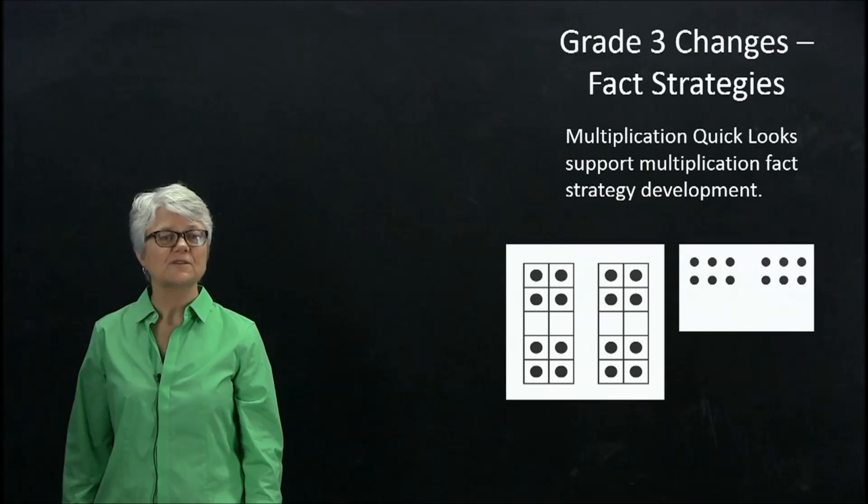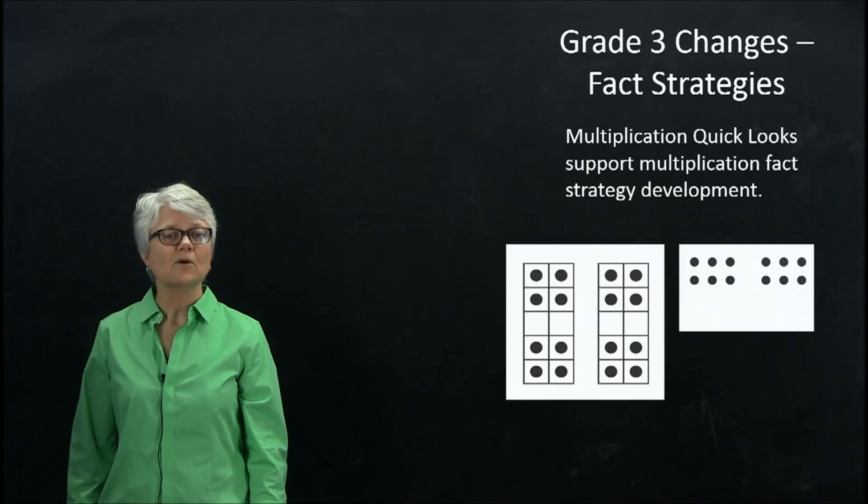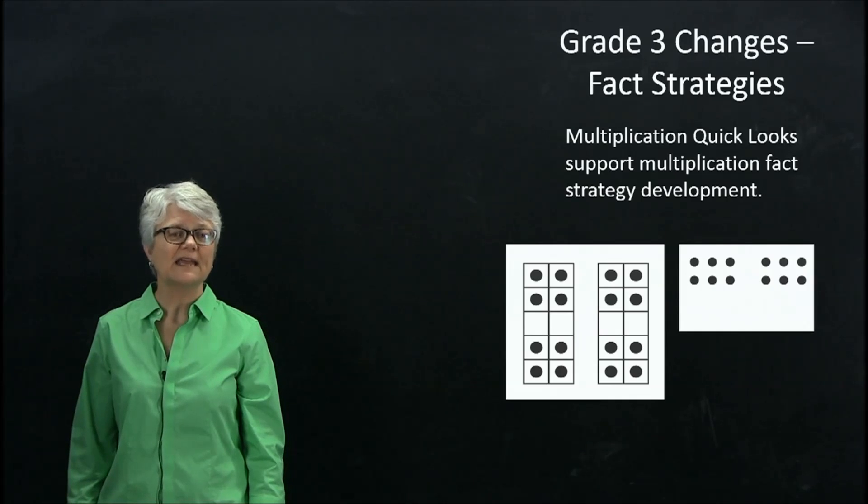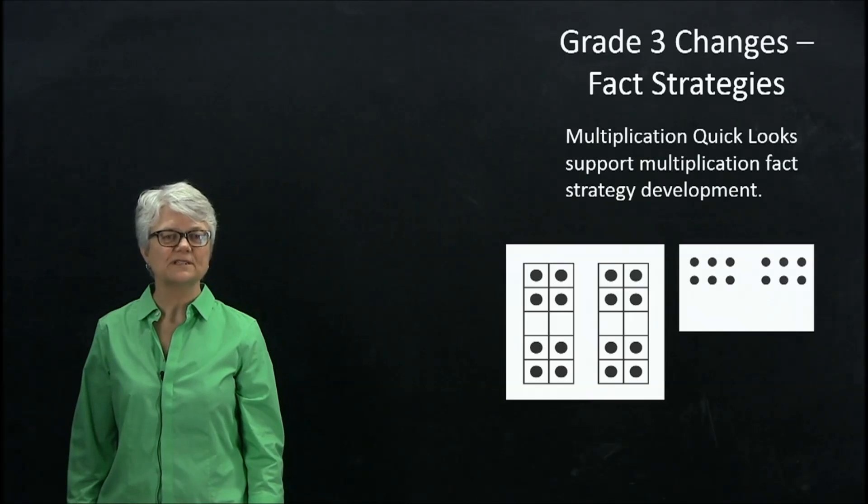On the quick look cards to the right, a child might see 2 groups of 6 or they might see 4 groups of 3. And again, skip count or do repeated addition to find that the total is 12.